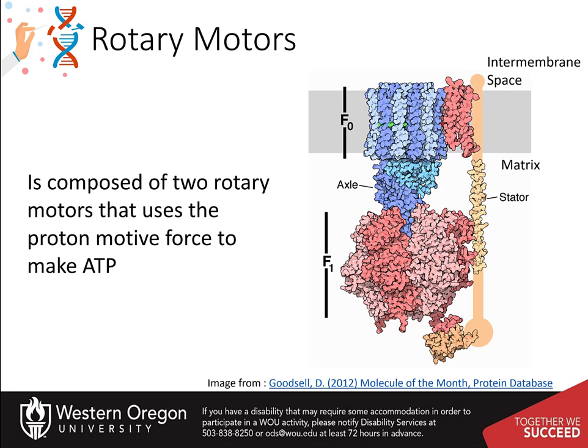ATP synthase is composed of two rotary motors, each powered by a different fuel. The motor at the top, termed F-naught, is an electric motor.